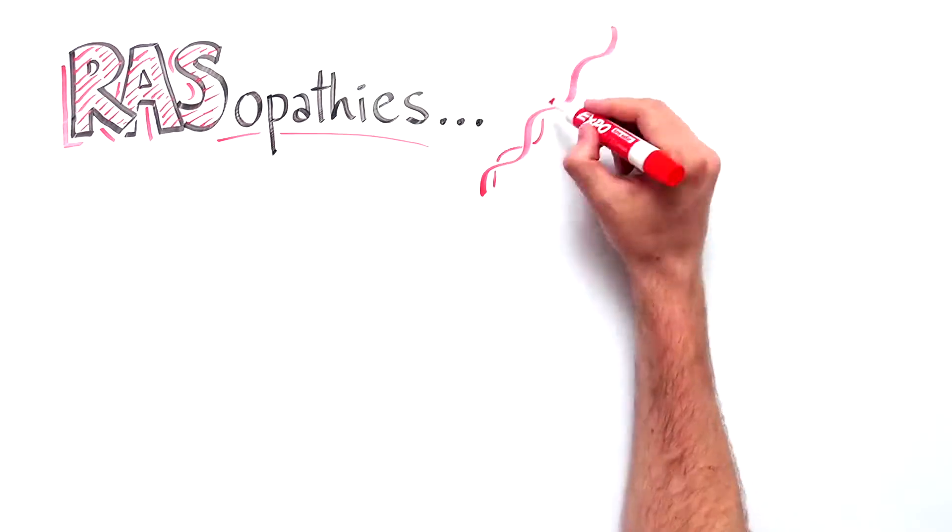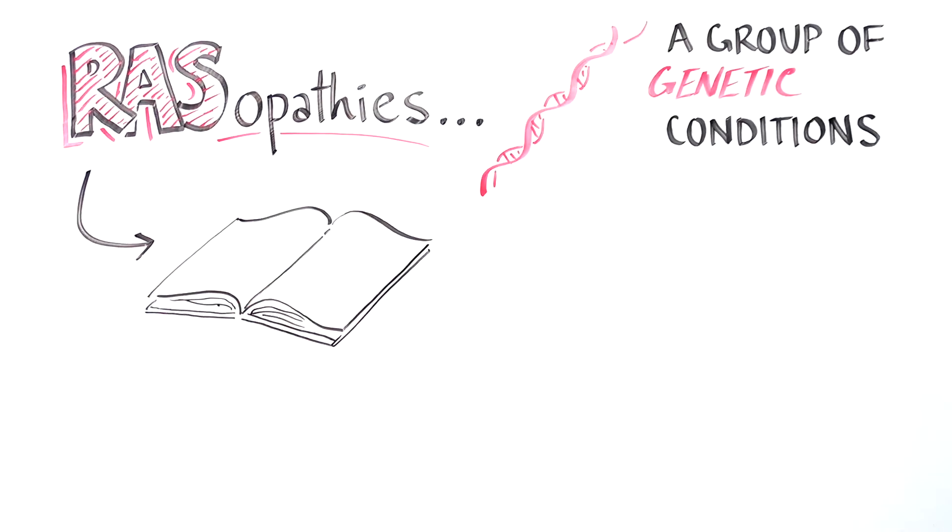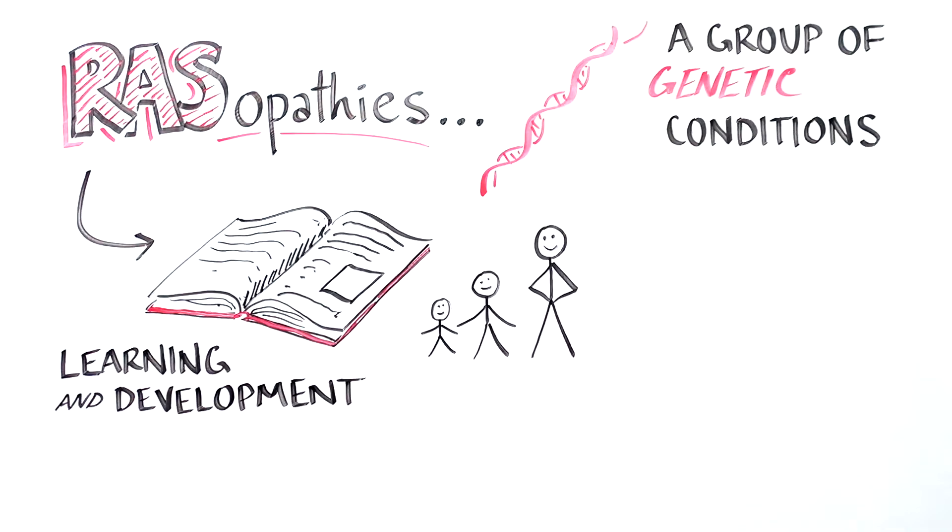To understand the RASopathies, the largest group of genetic conditions that affect learning and development, we need to first understand how the cells in our body communicate with or talk to each other.